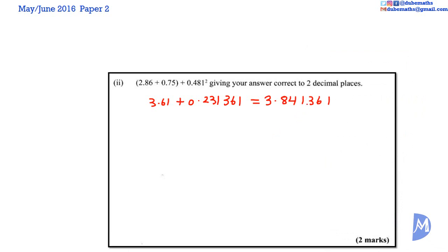And as before, to 2 decimal places, 1, 2. The first number to be discarded is less than 5 so we do not add 1. It's equal to 3.84 to 2 decimal places. And as before, using the calculator is much quicker and it's preferable.